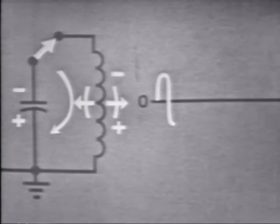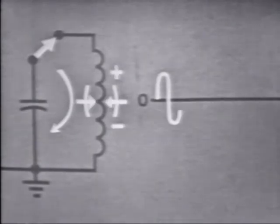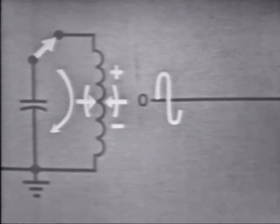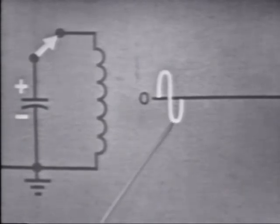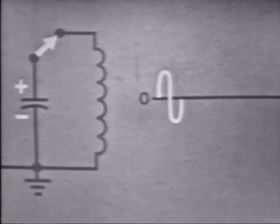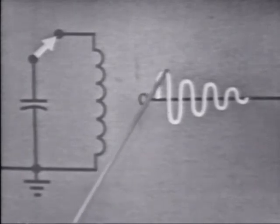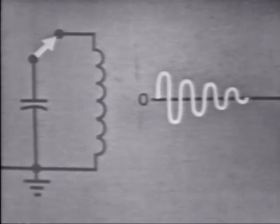As current begins to increase, the field about the coil expands — now notice that current is flowing in the opposite direction. At some point current will begin to decrease, and when it does the magnetic field will start to collapse, reversing direction and returning energy to the circuit, which will cause the capacitor to recharge in the original direction. When the coil's field is completely collapsed, current is zero and the capacitor is charged. Notice that the current on this alternation was not quite as great as the original alternation, due to circuit resistance. Thus, the output waveform will continually decrease until the energy in the circuit is completely absorbed.